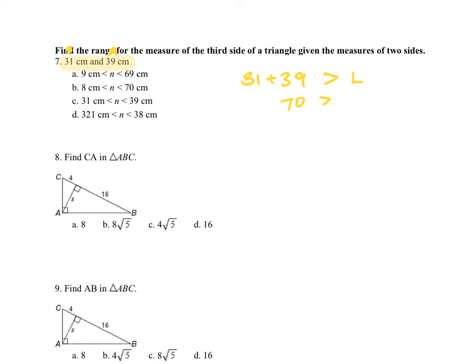So 70 has to be greater than something that's less than 70. So like 69.9 would satisfy that. Now if I assume that this was my large, that 39 centimeters was my large, I'm going to plug in a different problem. If 39 is my large and this, let's assume my 31 is my medium.